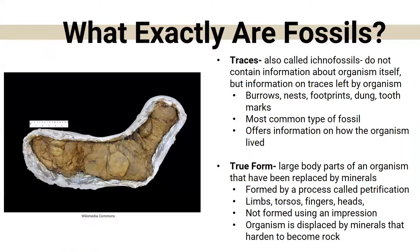Trace fossils don't necessarily contain information about the organism itself, but information on traces left by the organism — things like a burrow, a nest, or a footprint. Trace fossils are actually the most common kind of fossil you're going to find, and they offer more information on how the animal lived rather than what the animal looked like.